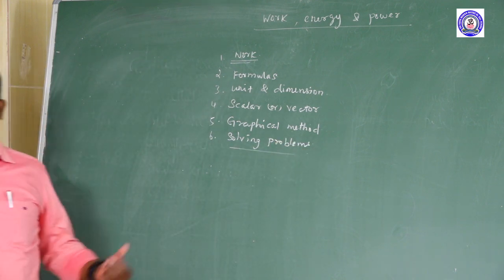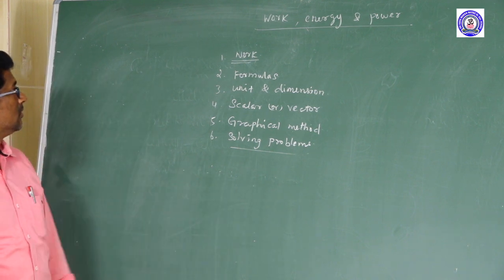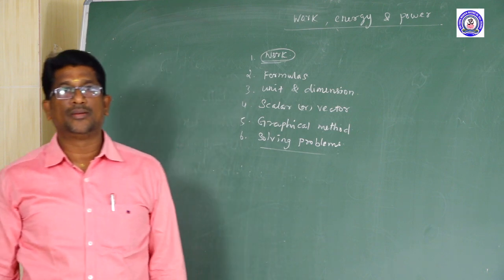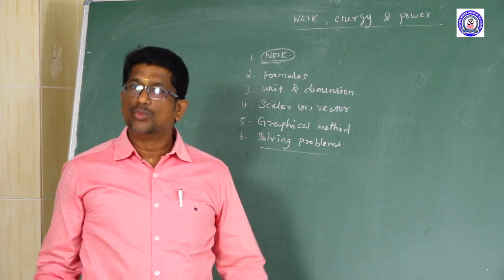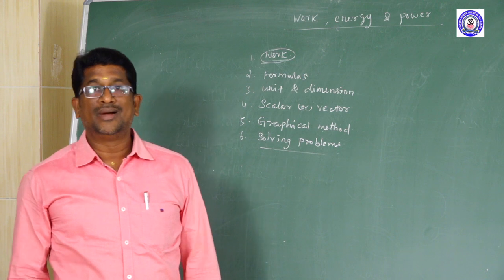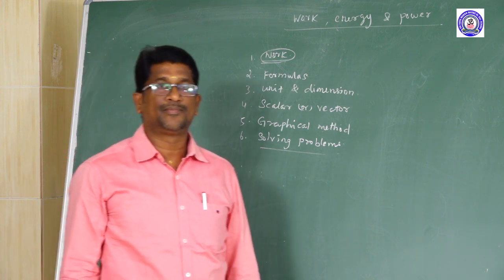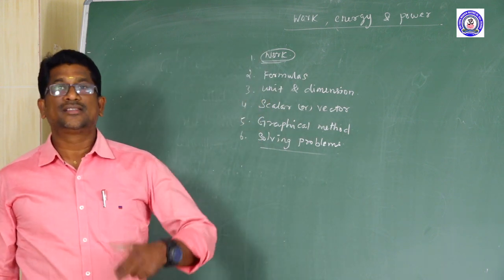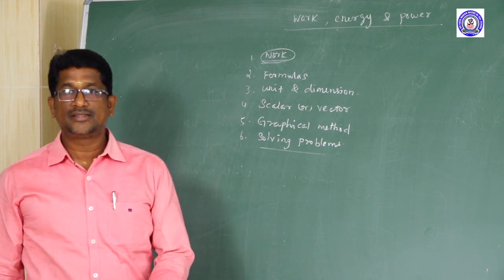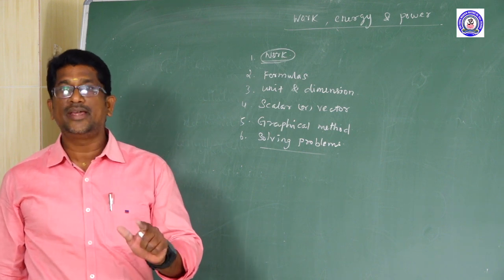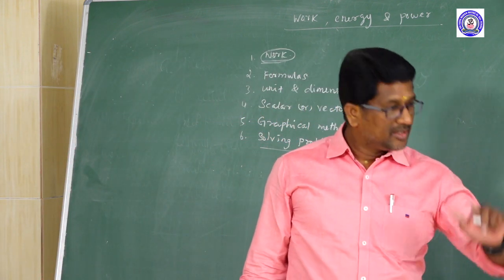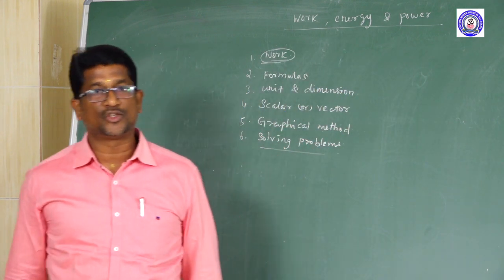Now we are going to discuss the definition of work. Generally, work refers to both physical and mental work — that is physical work and mental work, which we commonly call as work. But the meaning of work done in physics is entirely different. Here, work is said to be done when a force acts on a body and the point of application of force moves through a certain distance. In physics, work is said to be done only when an external force is applied on the body, and under the influence of that force the body must move from one point to another point.